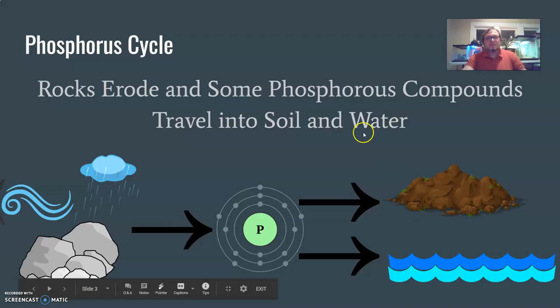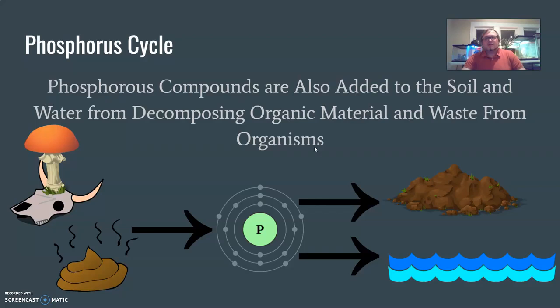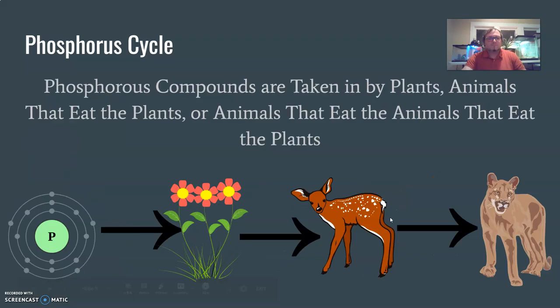Those phosphorus compounds end up in two pathways: the soil or the water. Phosphorus compounds are also added to the soil and water from decomposing organic material and waste from organisms — decomposers like fungi break down animals and waste material, releasing these phosphorus compounds into the soil and water.